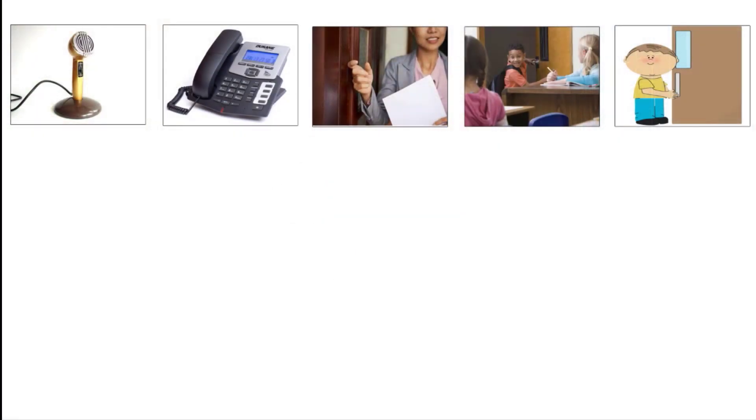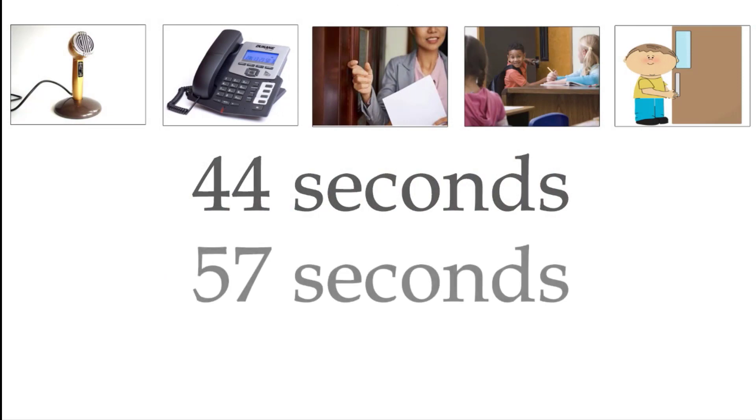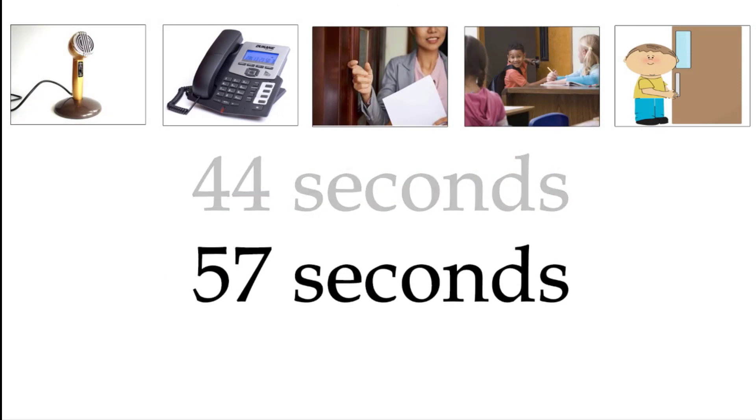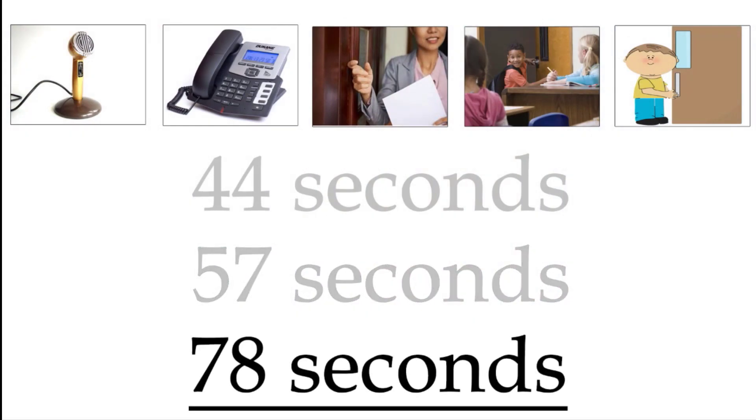What impact is this actually having? Each interruption was slightly different, but on average each one lasted about 44 seconds. Unfortunately, most interruptions lead to a snowball effect — once the interruption is done, it takes a while to get everyone back on task. That reset takes on average 57 seconds. Pulling these numbers together, and assuming not every interruption has the snowball effect, researchers found each interruption led to about 78 seconds of missed learning time.